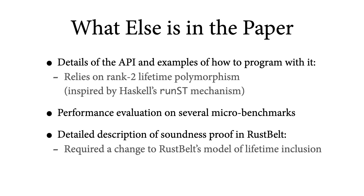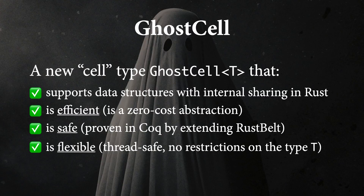If you found this talk interesting, there's a lot more in the paper. We give details of the GhostCell API and examples of how to program with it. To encode branded types, the API relies on the old trick of using rank-2 polymorphism to generate fresh brands, inspired by Haskell's RunST mechanism — except that in Rust, we represent brands using lifetimes rather than types, because Rust only supports rank-2 polymorphism over lifetime parameters, not type parameters. We also give an empirical evaluation showing that GhostCell outperforms other linked list and graph implementations on several microbenchmarks, and a detailed description of our soundness proof for GhostCell as a non-trivial extension to the RustBelt soundness proof. Thank you all for listening, and I'm looking forward to your questions.